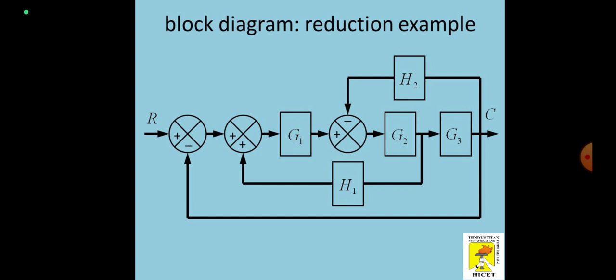The first thing is we have to visualize everything as a single block — either I should have one forward block and one feedback. I have to visualize this entire picture as one single block with respect to one feedback. If you see here, we have three summing points with respect to the input R and the output C. The first summing point is plus-minus; we have a unity feedback system, so that is why the line is drawn.